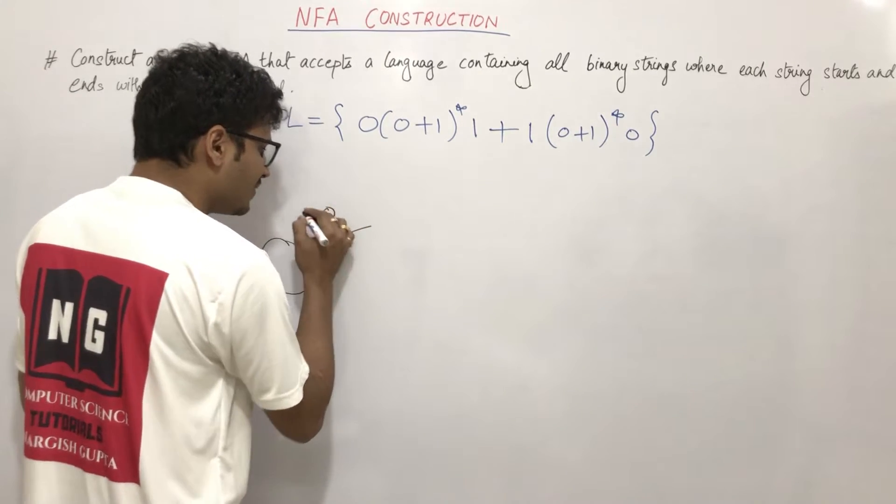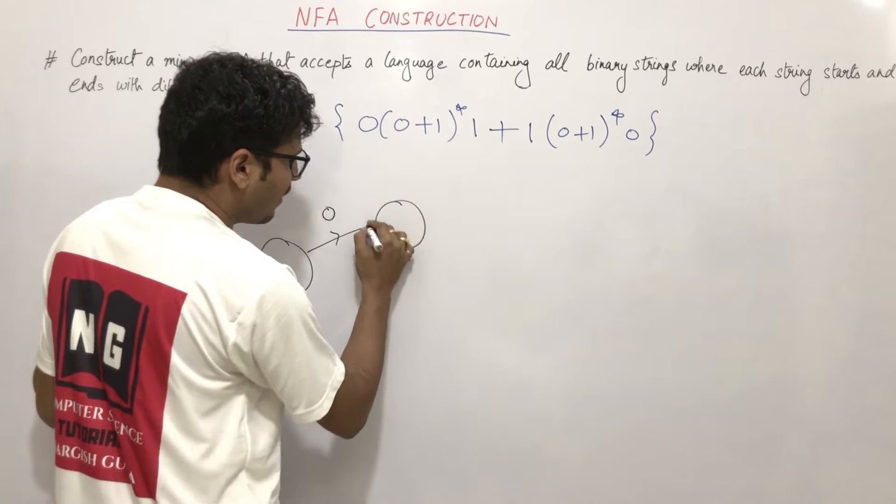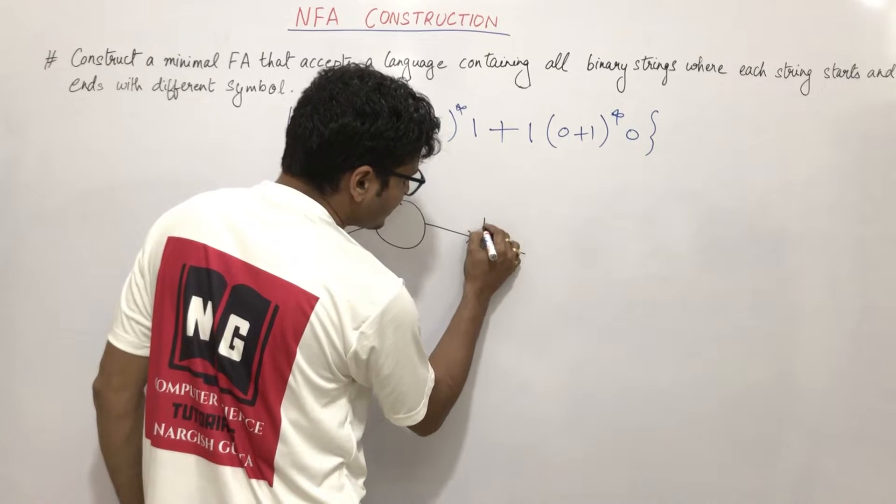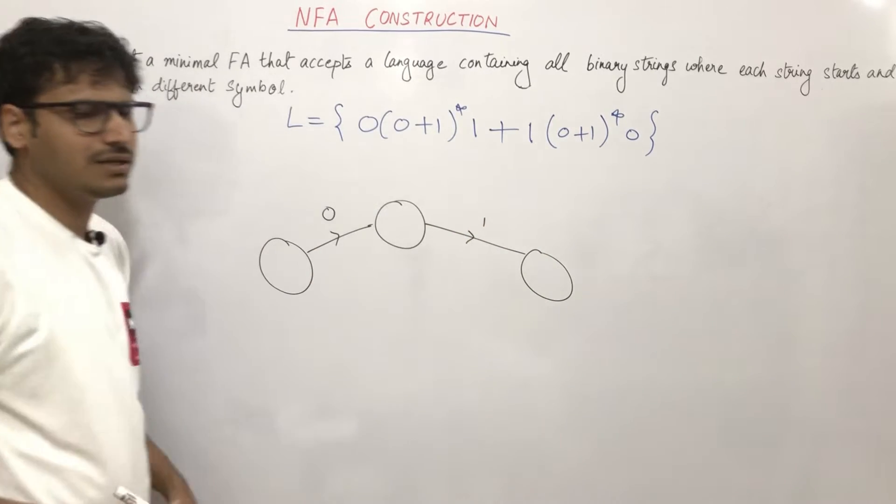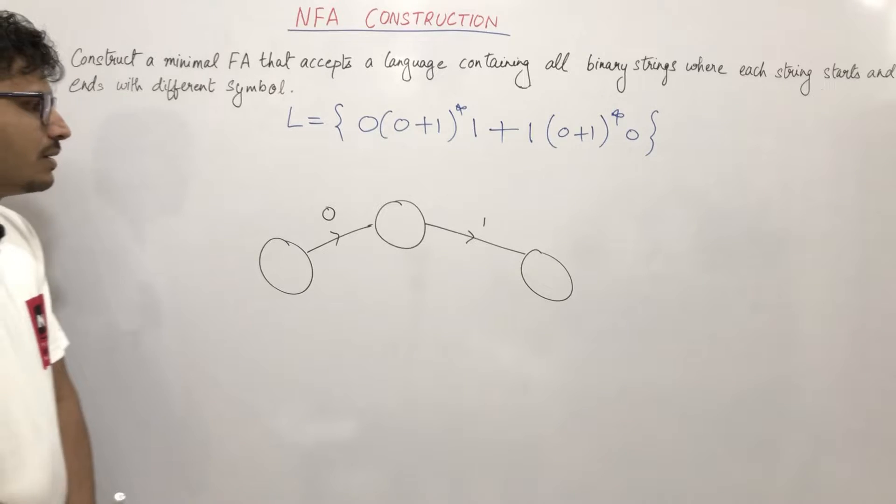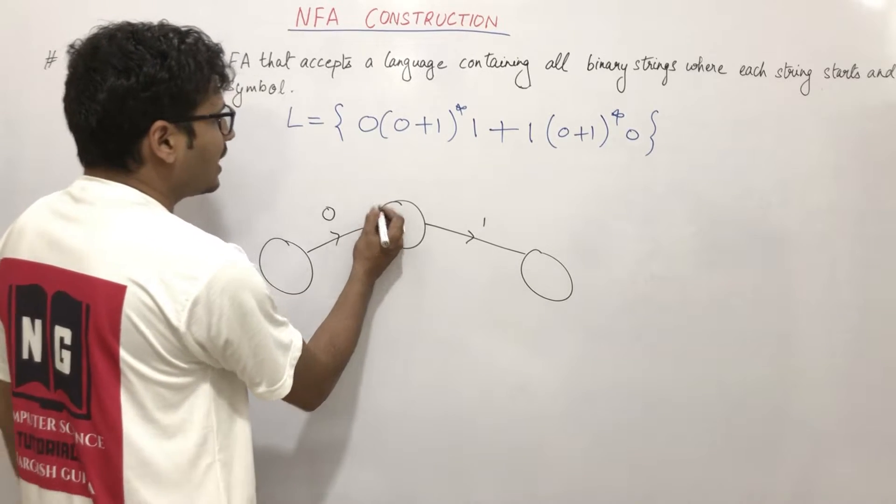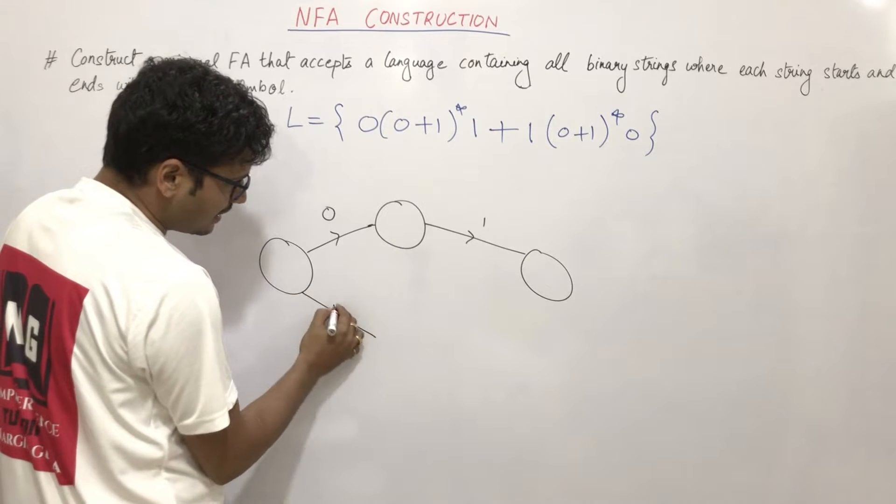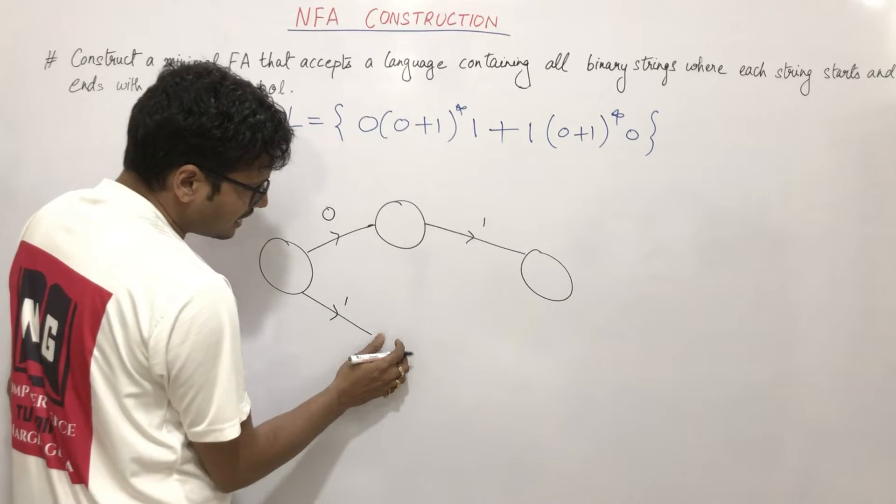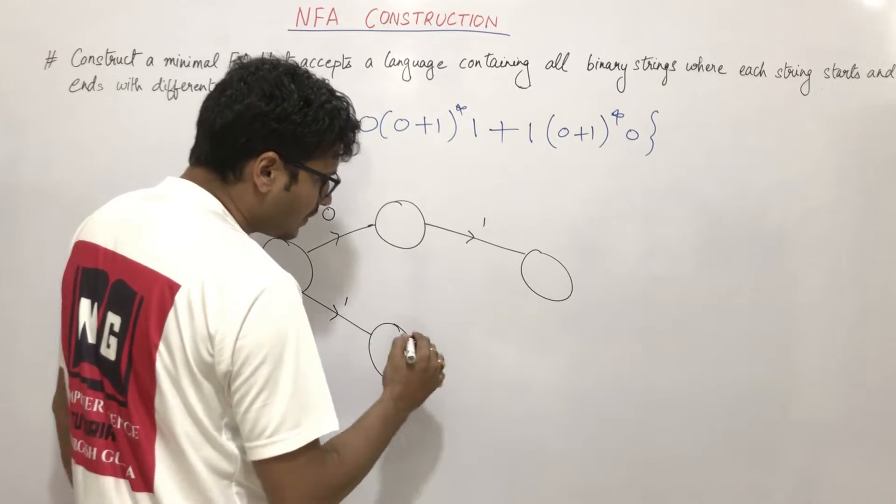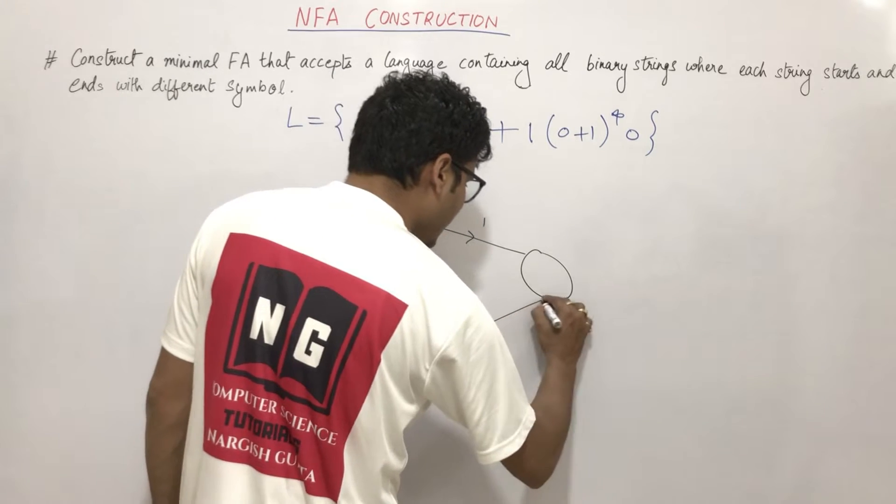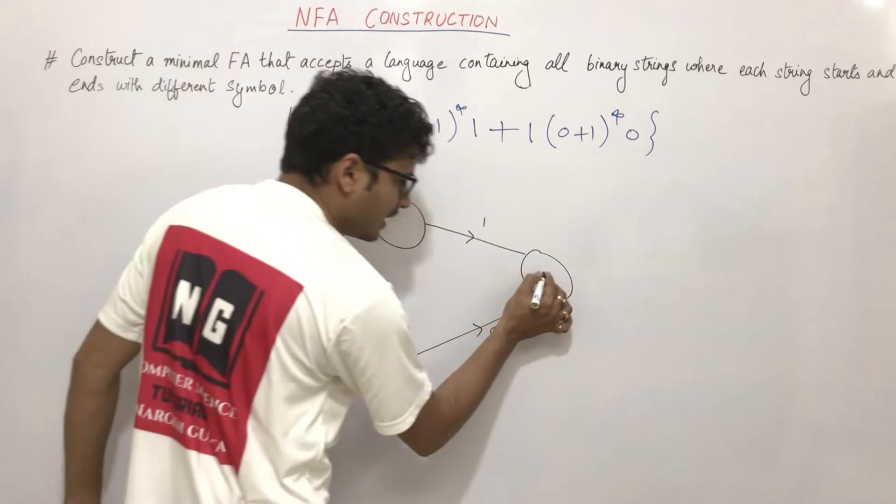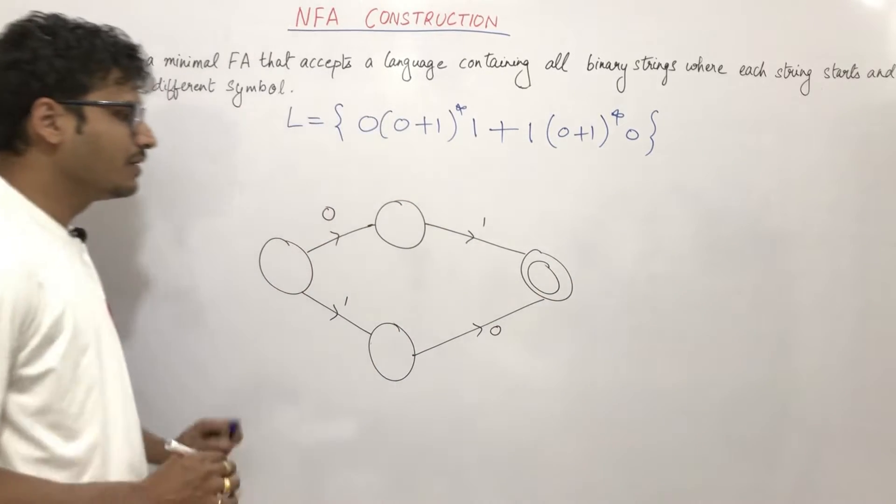Basic string means starting is with 0 and if starting is with 0 then end should be with 1 - start with 0 end with 1. That's one thing. And the other thing is if we start with 1, then it should end with 0. If you start with 1 then it should end with 0.